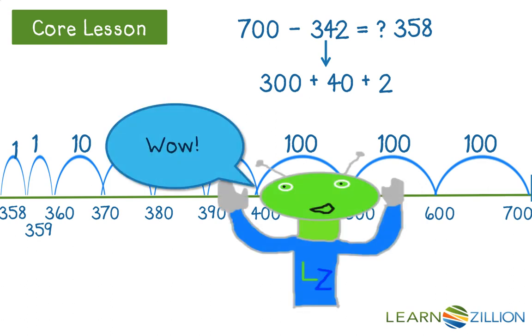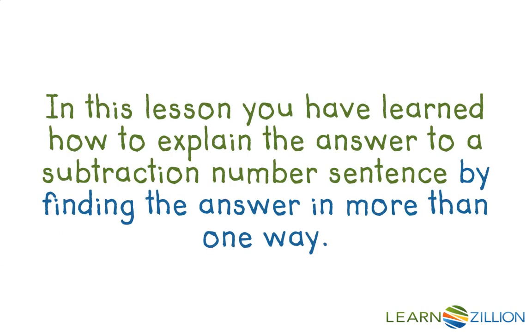So, we just found the answer 358 in two different ways, proving that it is the correct answer. In this lesson, you have learned how to explain the answer to a subtraction number sentence by finding the answer in more than one way.